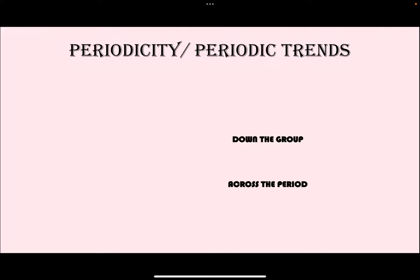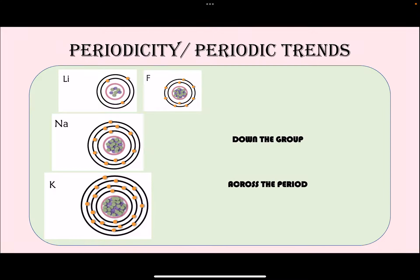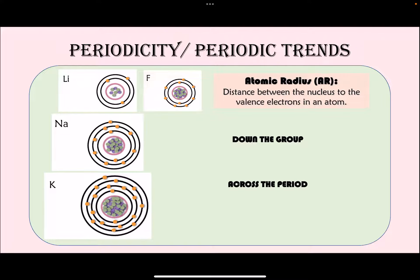Next let's talk about periodicity, or periodic trends — what happens to elements as we go down a group and across a period in terms of specific properties. The first property is atomic radius, defined as the distance between the nucleus and the valence electrons in an atom. We will compare lithium, sodium, and potassium in the same group to see the trend going down, and lithium versus fluorine in the same period to see the trend across.